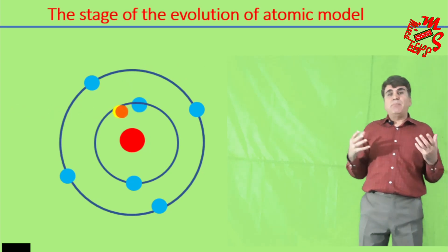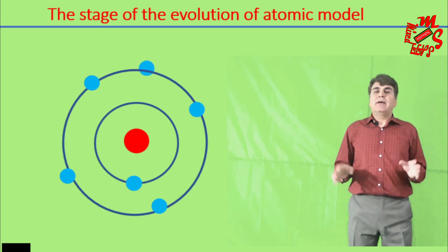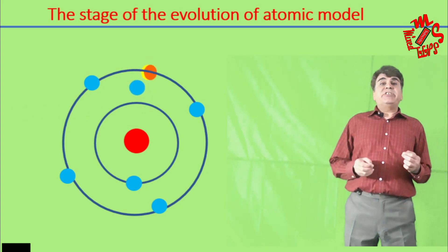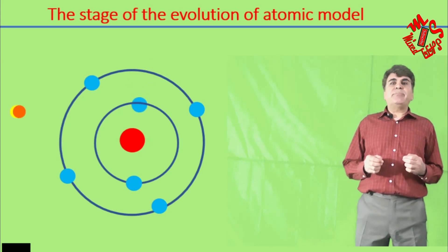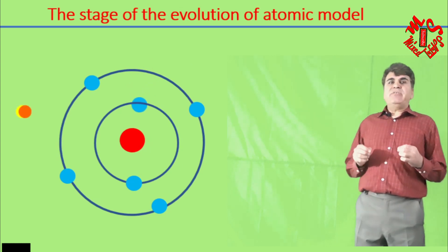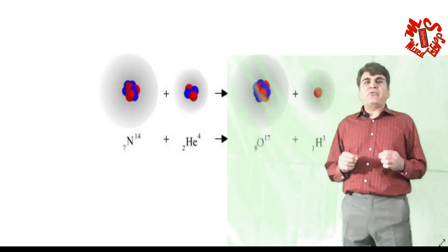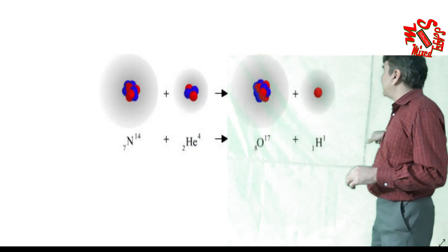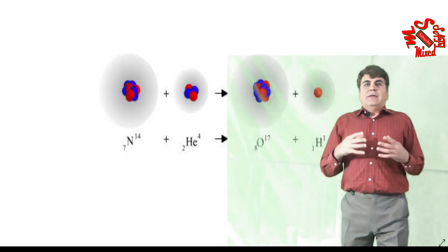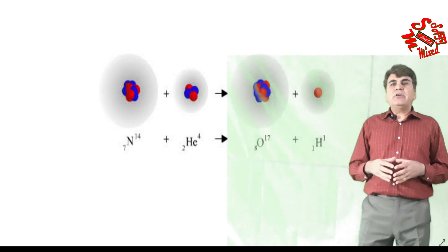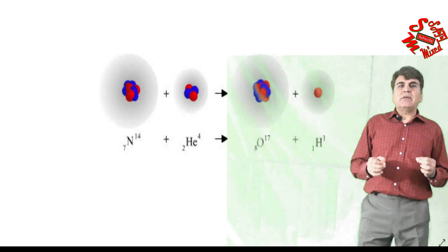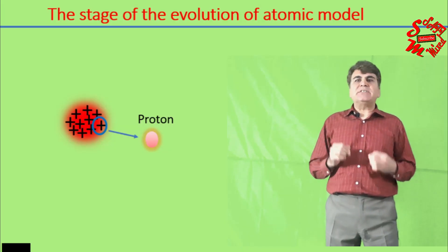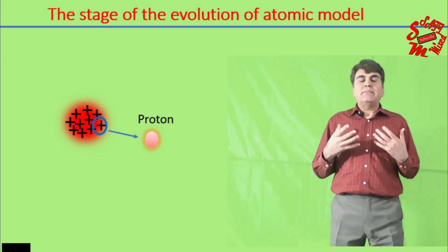The discovery of proton in 1917 by Rutherford and the first kind of nuclear reaction between alpha particles and nitrogen atom of the form shown over here further clarified that the nucleus of an atom is not a single particle; rather it is composed of discrete positively charged particles called protons.